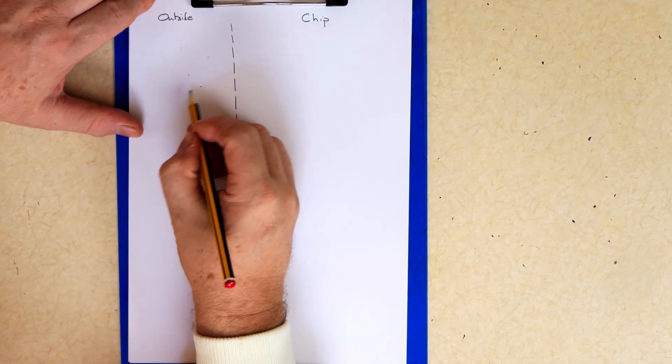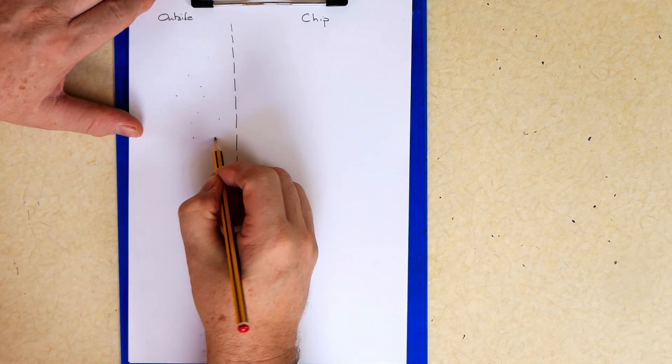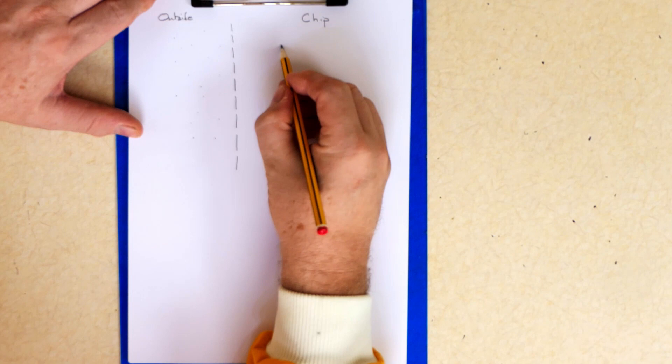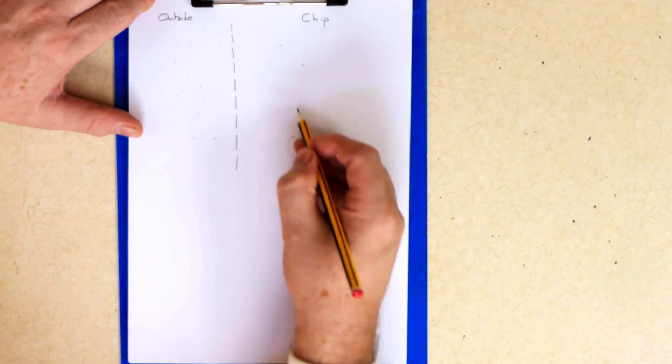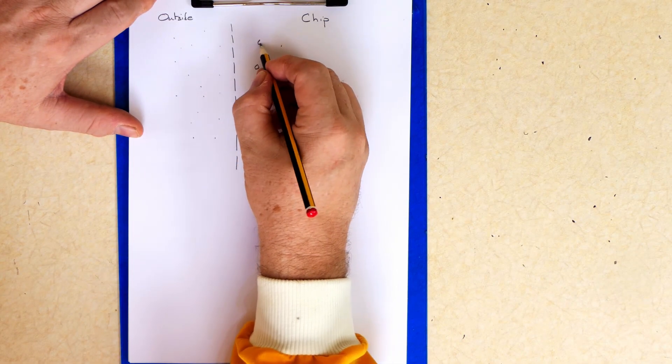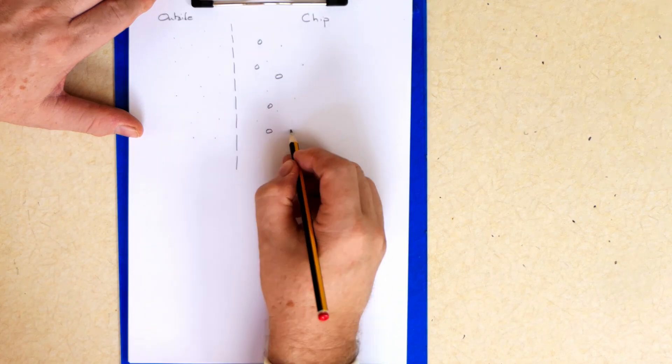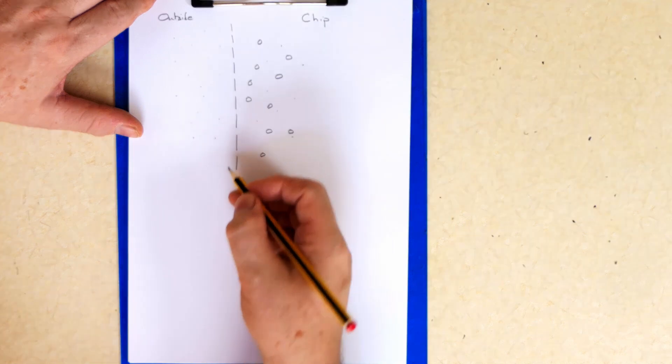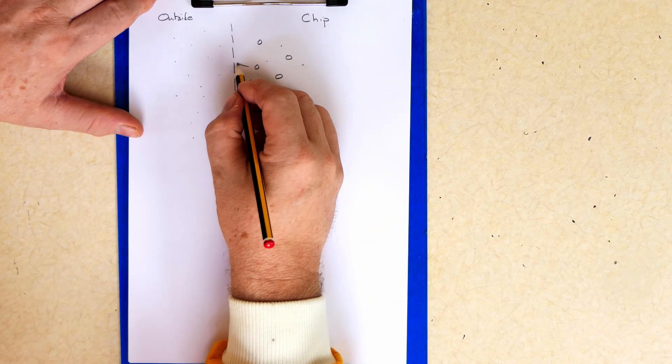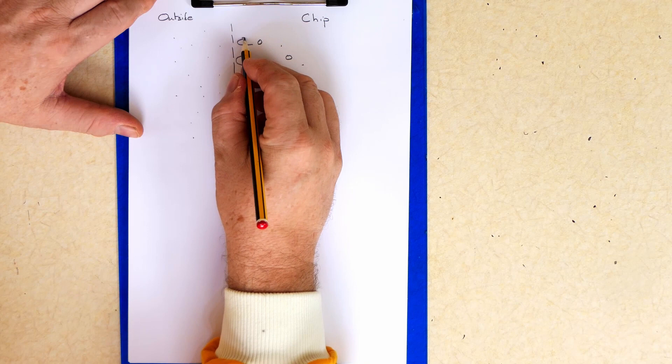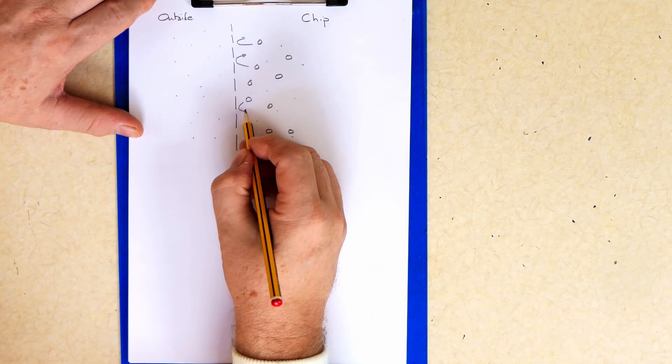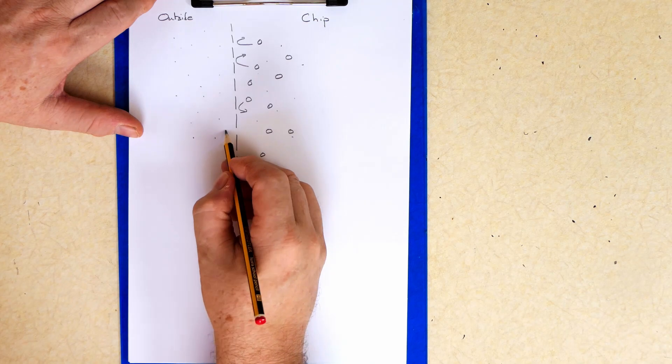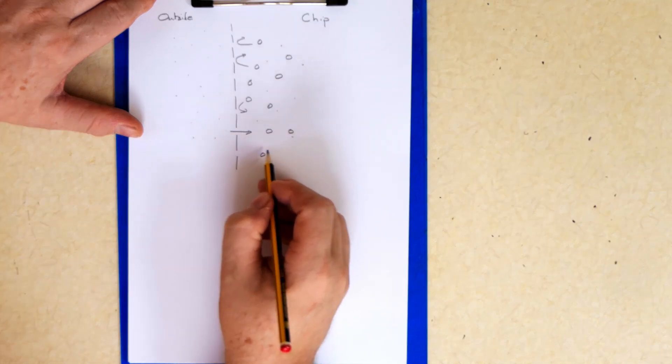Outside I've got these little dots which represent molecules of water. Inside I've got these little dots. And we've also got molecules of our salt solution. Now this is too big to go through the partially permeable membrane. So the salt can't travel. But the water molecules can travel through.